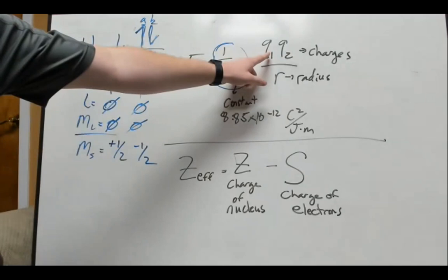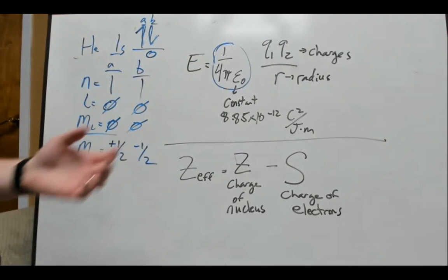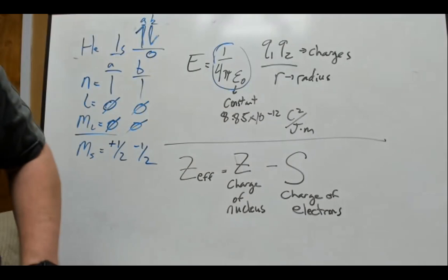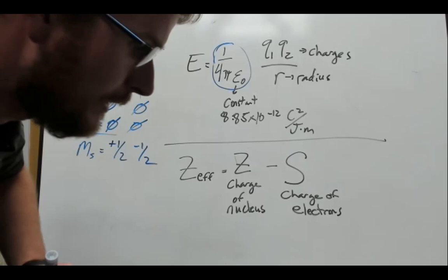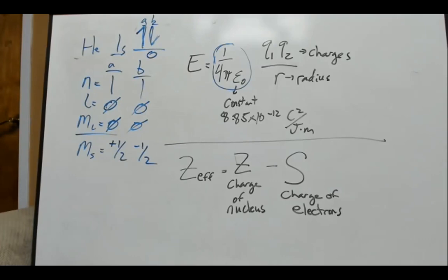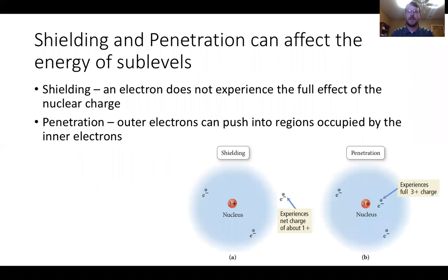The charge Q1 times Q2 — like times like, whether negative times negative or positive times positive — always gives a positive number, which is not what we want. A positive times a negative gives a negative number, which is what we want. The more charge, the bigger the potential energy. On an exam, if I give you three pairs of particles at the same distance and ask which has the highest potential energy — for example, +1/−1, +1/+1, and −2/+1 — the −2/+1 pair has the highest potential energy because only the charges are changing, not the distances.